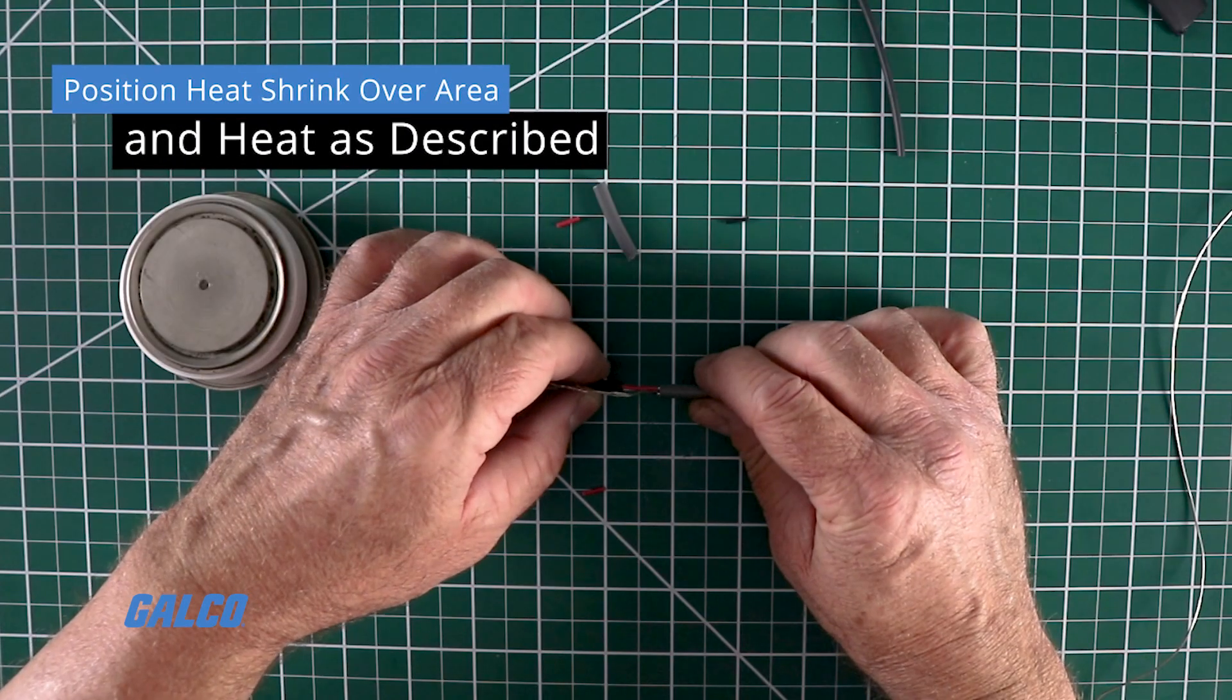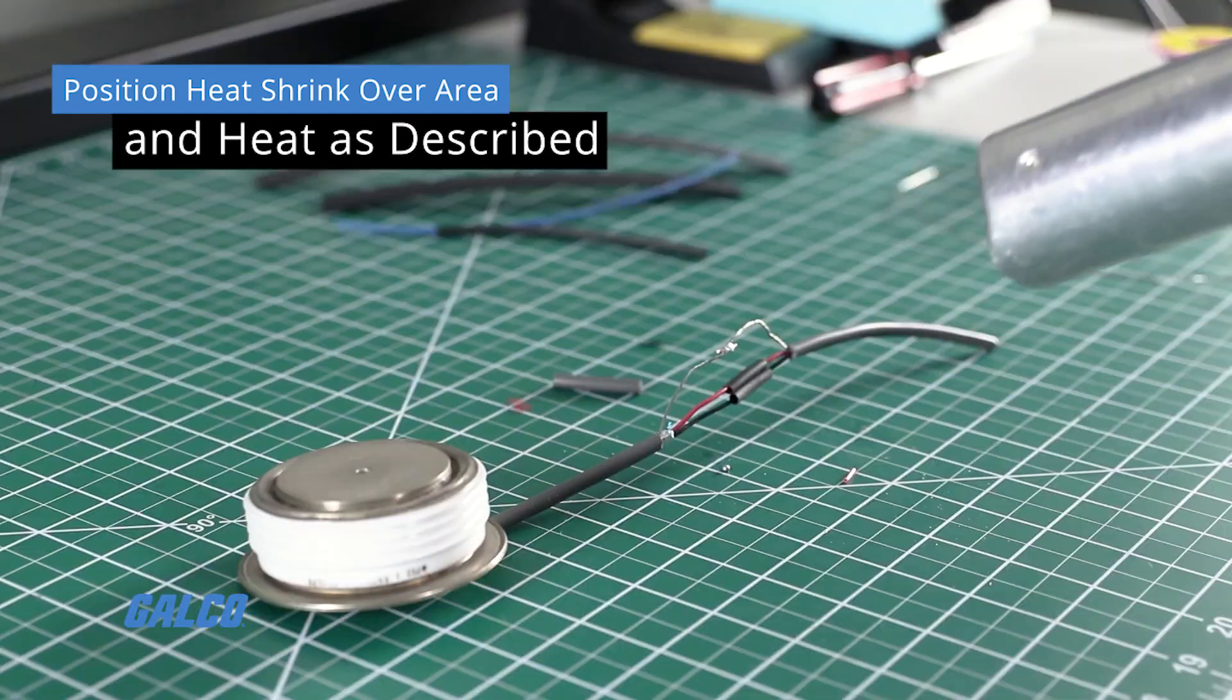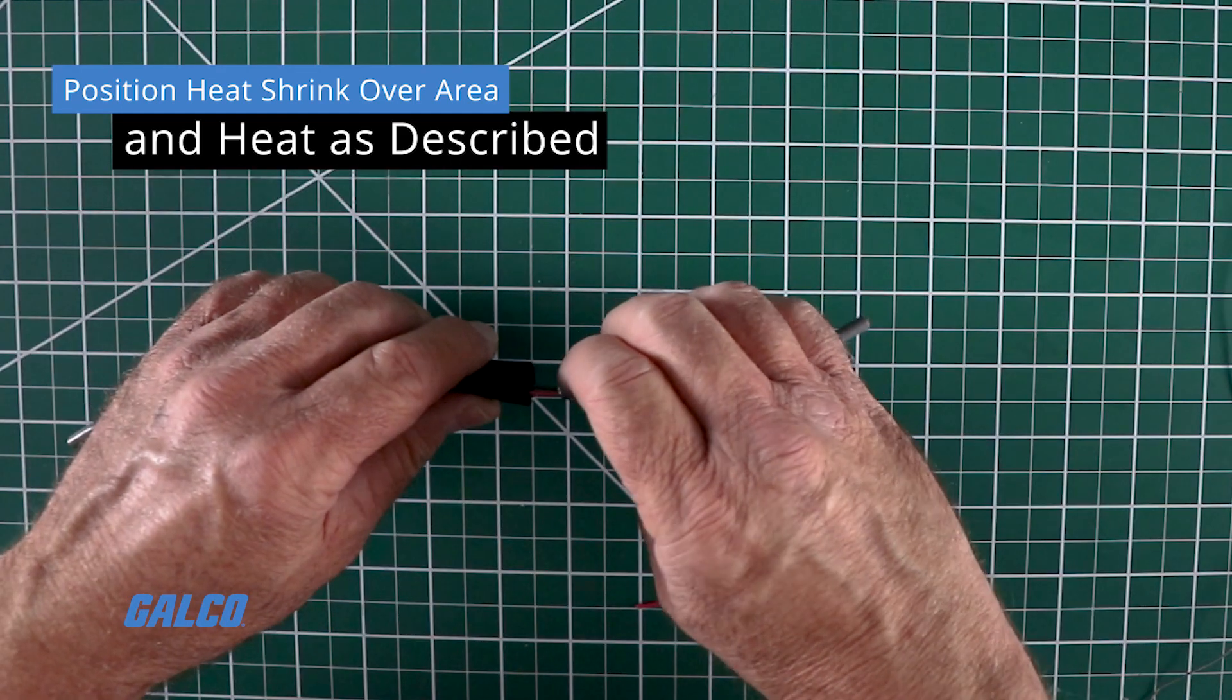From here, position the heat shrink over the area soldered and heat, as we described earlier, to shrink in place.